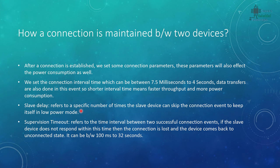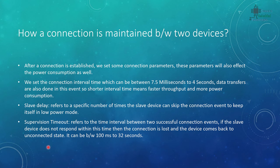After a connection is established, we set connection parameters that also affect power consumption. The connection time interval can be set between 7.5 milliseconds and 4 seconds — shorter intervals mean faster throughput but more power consumption. There is also slave latency, which refers to the number of connection events the slave can skip. Finally, supervision timeout refers to the maximum time between two successful connection events; if the slave doesn't respond within this time, the connection is lost. It can be set between 100 milliseconds and 32 seconds.